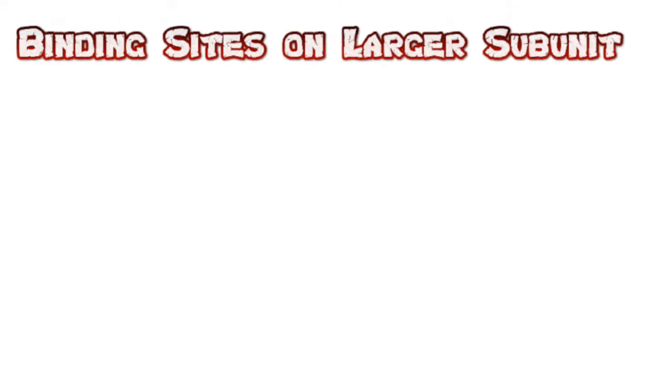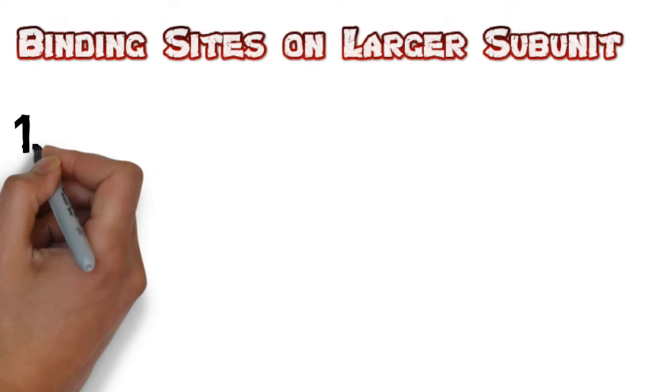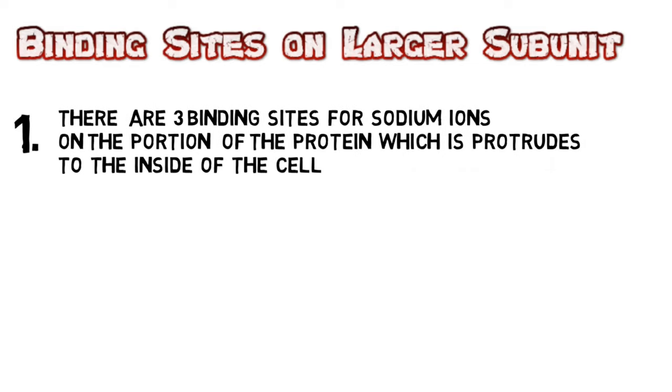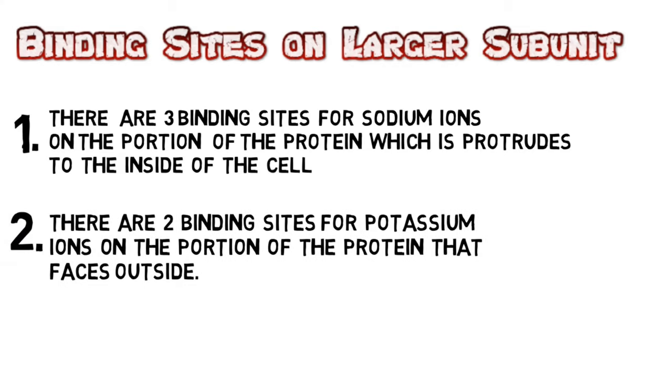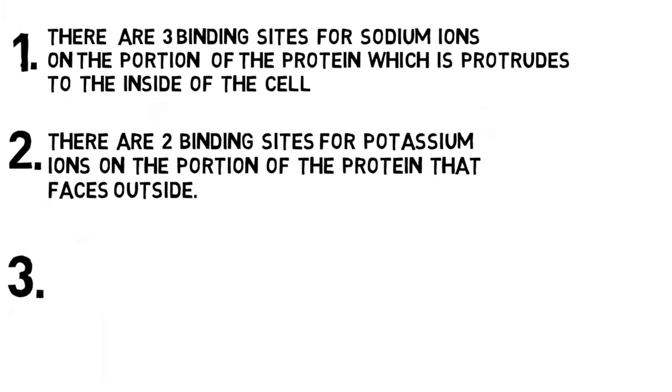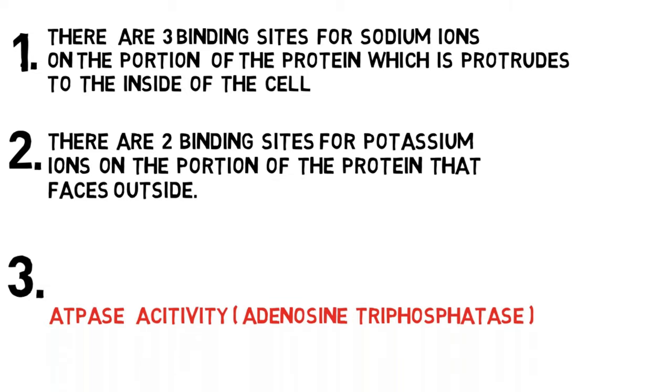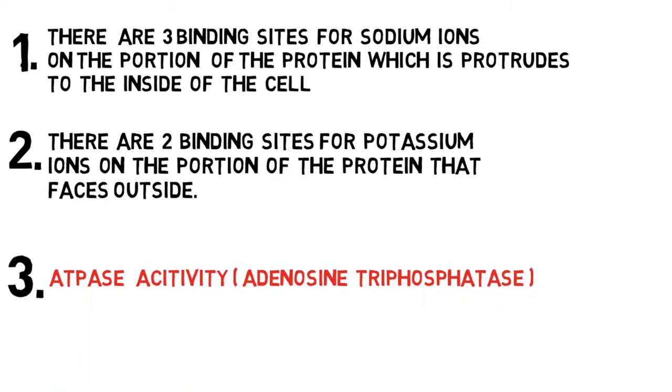Let's discuss the binding sites on the larger subunit. There are three binding sites for sodium ions on the portion of the protein which protrudes to the inside of the cell. There are two binding sites for potassium ions on the portion that faces outside. Near the sodium binding sites there is ATPase activity, adenosine triphosphatase, which is present to provide energy for the pump.